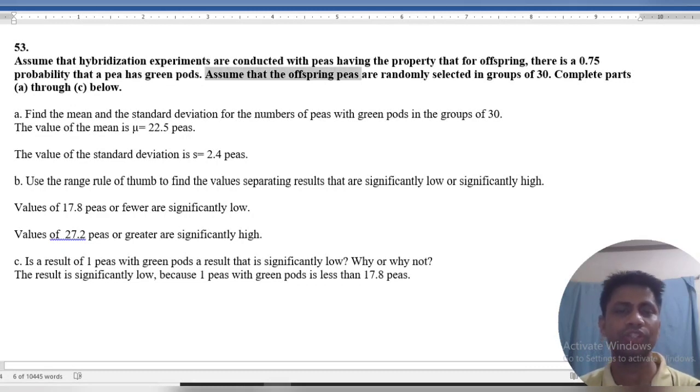Assume that the offspring peas are randomly selected in groups of 30. Complete parts A through C. Find the mean and the standard deviation for the number of peas with green pods in groups of 30.